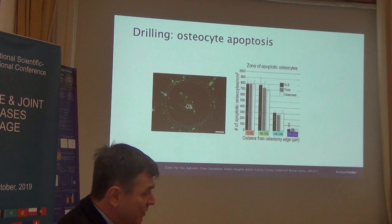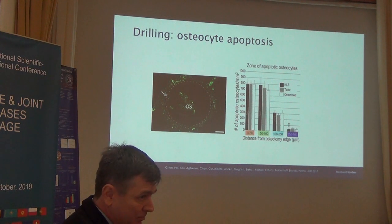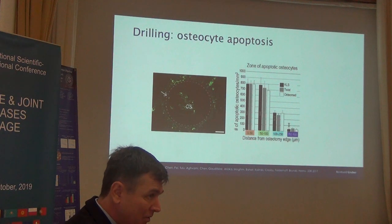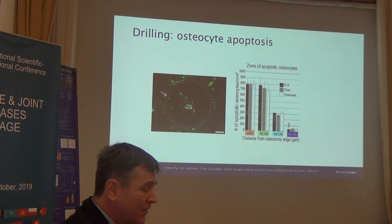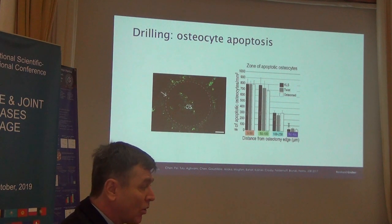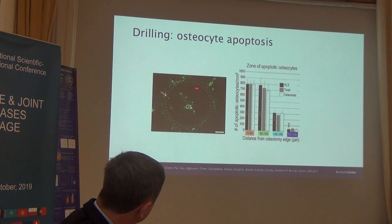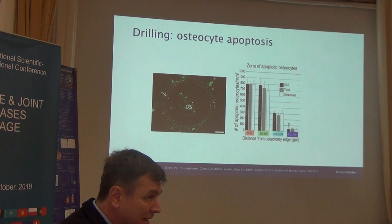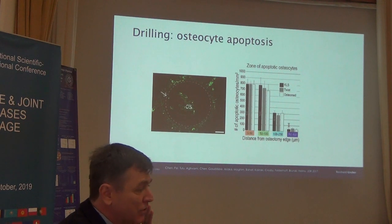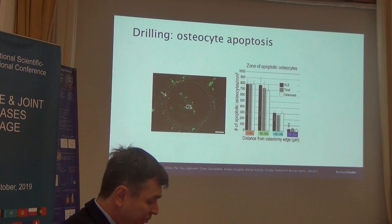What we have learned recently is that when osteocytes are dying — when osteocytes undergo apoptosis — this is the main signal for bone resorption. So dying osteocytes cause bone resorption. When you insert an implant you have to drill the bone, and this drilling creates a ring of apoptotic osteocytes. It is exactly this region that is resorbed in the early phase after implant placement.